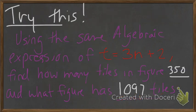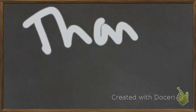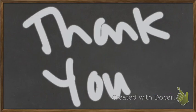So, your try this assignment, your take home. Using the same algebraic expression of t equals 3n plus 2, how many tiles are in figure 350? And what figure has 1,097 tiles? Give that a go. I apologize for the length of the video. But as always, we say thank you and hope you have a nice day.